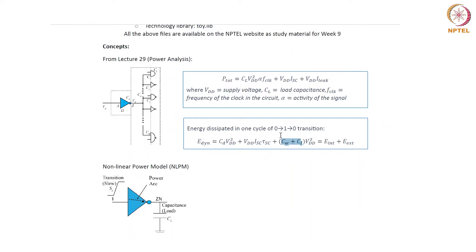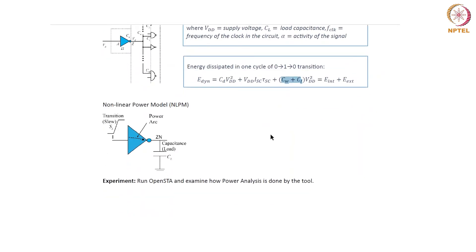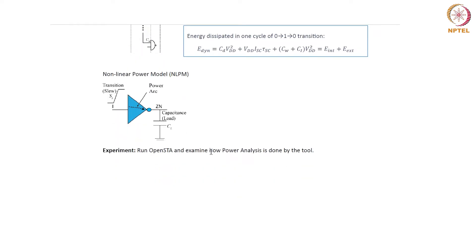The internal power dissipation component is modeled in the technology library as a non-linear power model. We have seen that this model represents internal power as a function of input slew or input transition time and the output load capacitance. It is modeled as a two-dimensional table, as we will be seeing in today's tutorial. Now let us run OpenSTA and examine how power analysis is done by the tool.